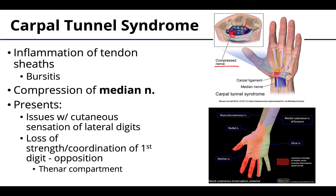The median nerve also has a motor branch that innervates the thenar compartment hand muscles — the muscles associated with the first digit. Several actions will be affected, but opposition of the thumb is one you can easily test to assess involvement. There can be loss of strength or even loss of coordination in those actions. With prolonged compression, there can be atrophy of the muscles in the thenar compartment.